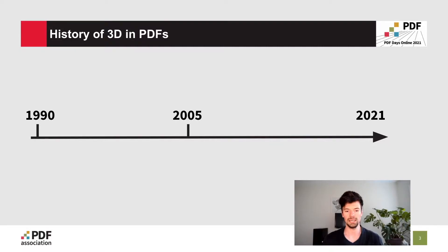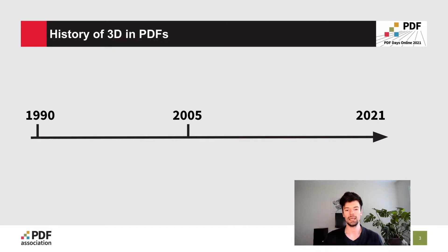When talking about 3D PDFs, it's really important to go back in history of how the 3D format came about in the first place in a PDF document. Stepping all the way back to 1990, the portable document format was created in the early 1990s. PDFs were then rapidly adopted in all of the different verticals and use cases, including manufacturing, construction, and industrial applications.